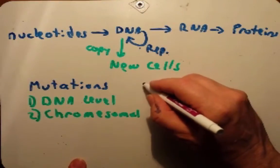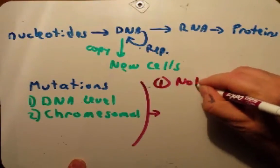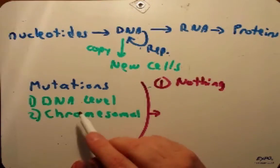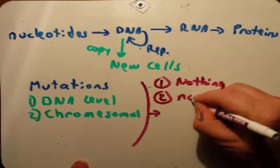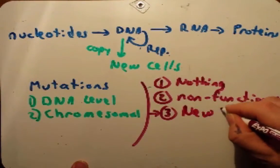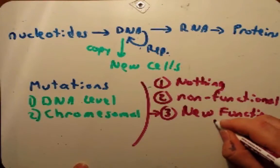Regardless of the mutations that we're going to talk about, different things can happen. The first and probably most common is nothing — a lot of mutations result in no problem at all, no change. We've changed the DNA level or the chromosomal structure in some way but in the end there's no change. It can lead to a non-functional protein or RNA, or it can lead to a new function. If these new functions have some sort of selective advantage — meaning a new functioning gene gives that organism some sort of mating advantage where they're able to pass their genes on more effectively — then this can help direct evolution.